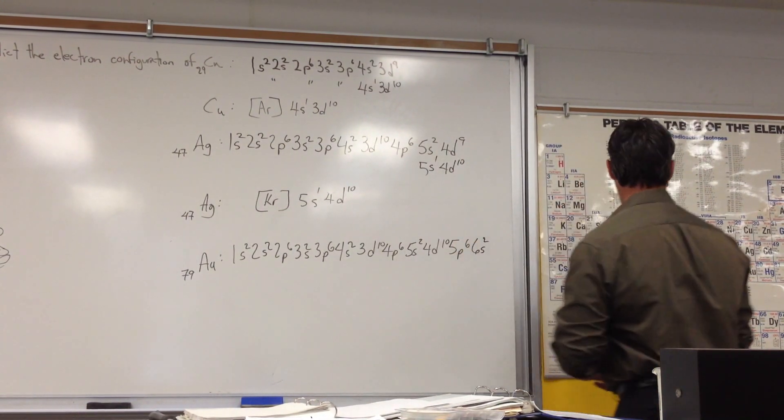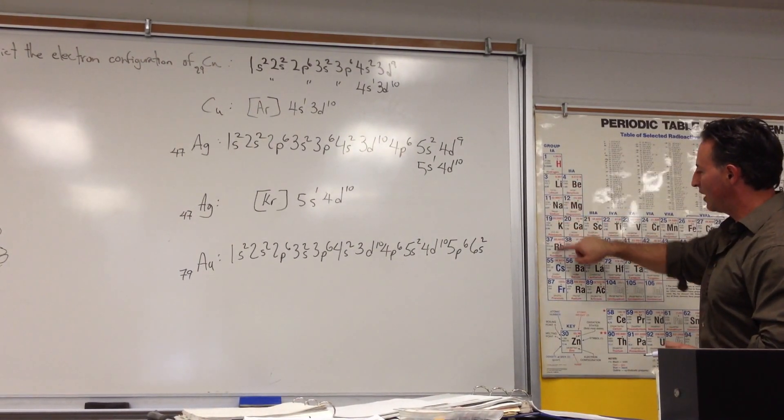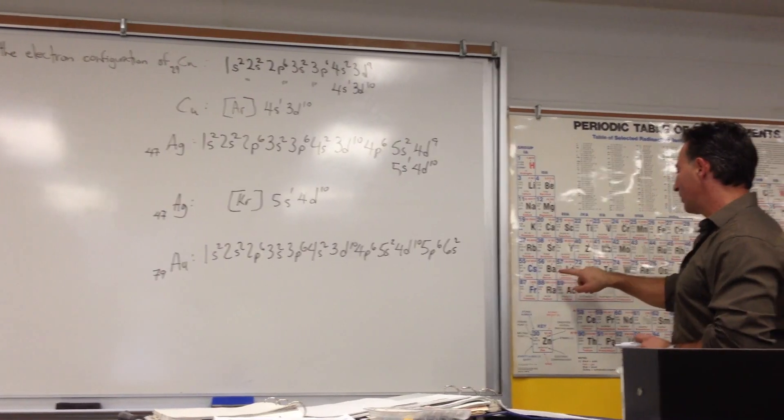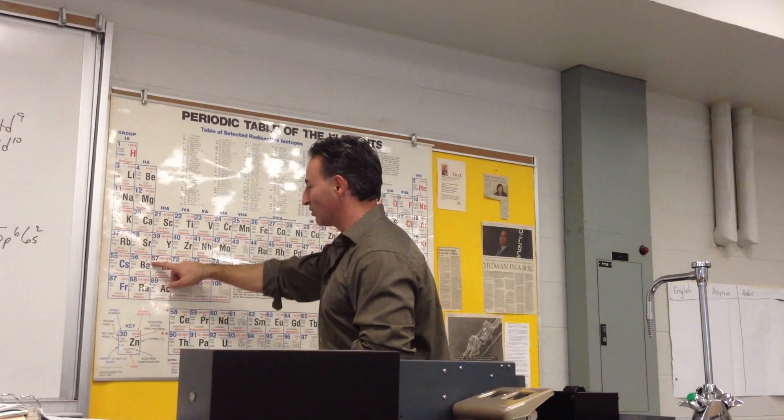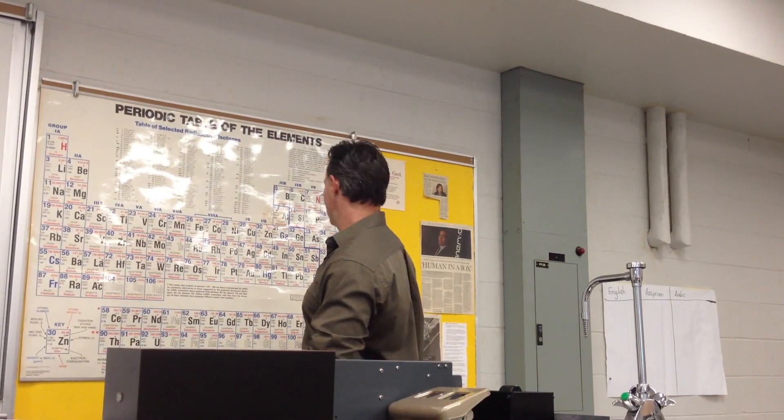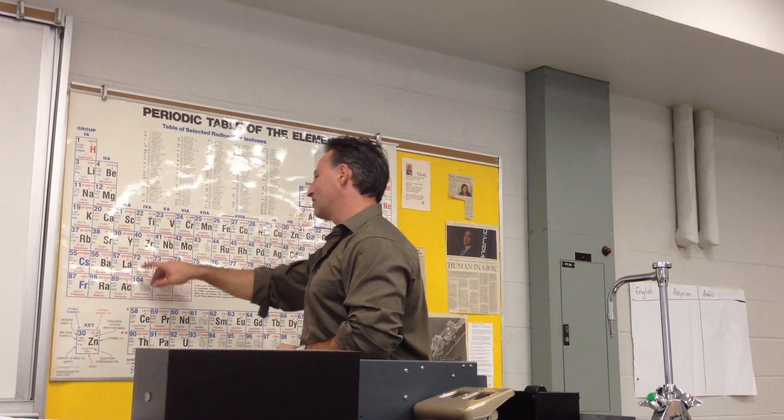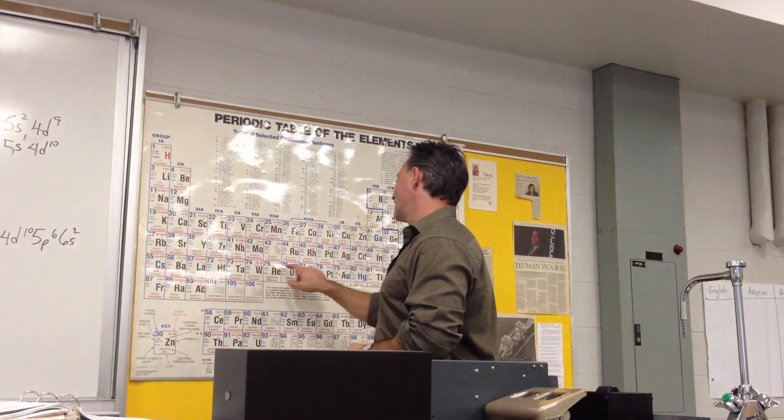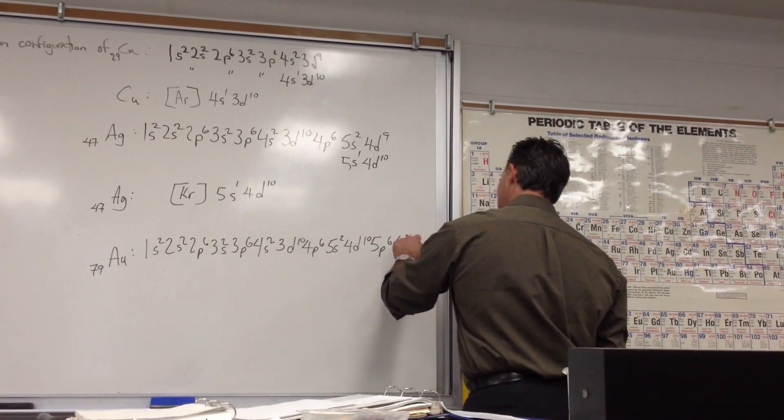And then we're going to count off from 6s2. Here we are at barium, 6s2. And we have to go all through here. Yep, f-block, don't forget that. See, it goes 57, 58 through there. You're going to have to have a 4f14 in there. And then you go back, and then you count from left, and then you see how many spaces. 1, 2, 3, 4, 5, 6, 7, 8, 9. So 6s2, 4f14.